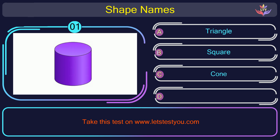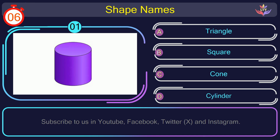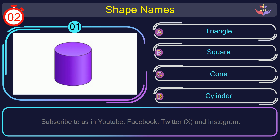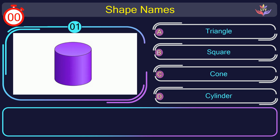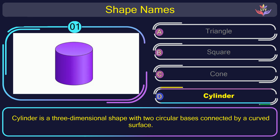Question number 1. Find the name of the shape in this picture. The correct answer is option D. Cylinder. Cylinder is a three-dimensional shape with two circular bases connected by a curved surface.